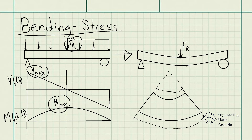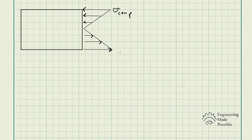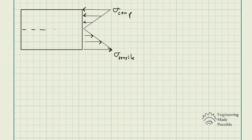Now let me draw the stress distribution along the cross section of a beam in bending. Cutting the beam and exposing internal stresses, the top portion experiences compressive stress — pointing towards the left — while the bottom portion experiences tensile stress. For a rectangular cross section, the stress distribution is a mirror image: top and bottom stresses are equal and opposite. Right at the center — the neutral axis — the beam experiences zero axial stress.